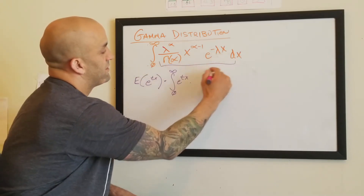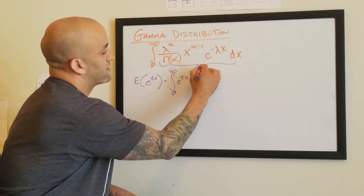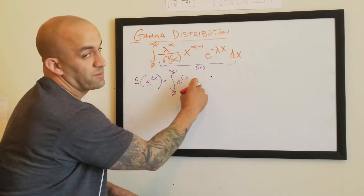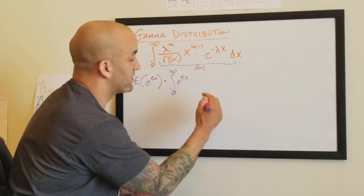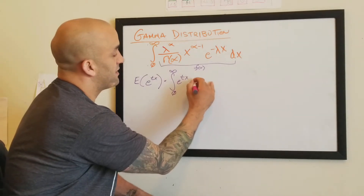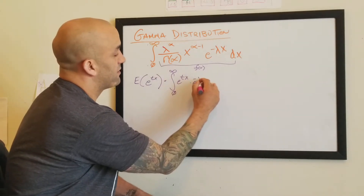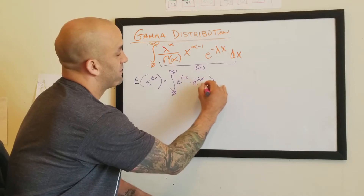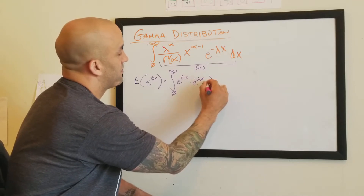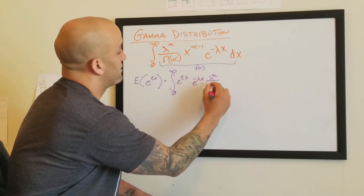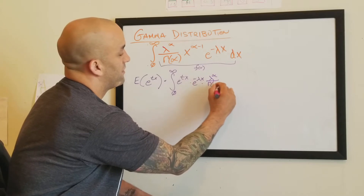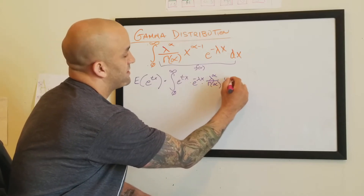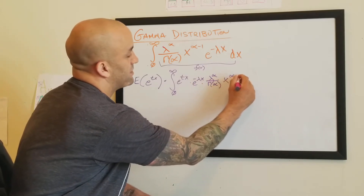This right here is our f of x. So times it by — and I'm going to pull this one over here so we can combine the terms. We're going to have e to the negative lambda x, lambda to the alpha, gamma of alpha, x to the alpha minus 1 dx.